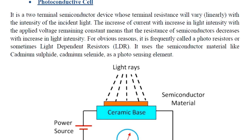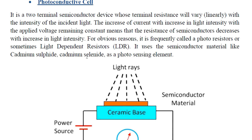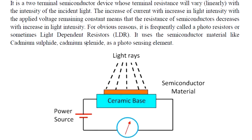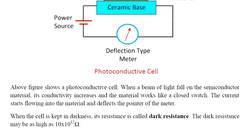The light-dependent resistor, also called photoresistance, uses semiconductor materials like cadmium sulfide or cadmium selenide as the photo-sensing element. When the cell is kept in darkness, its resistance is called dark resistance. The LDR has a high dark resistance, typically in the range of kilohms to megaohms.